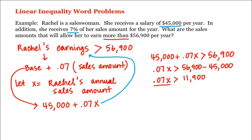Now we can divide both sides by 0.07, which gives us X is greater than 11,900 divided by 0.07.